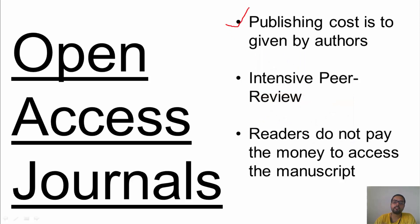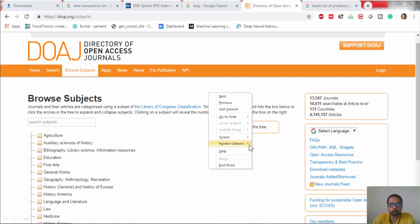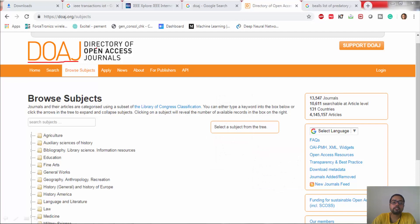In open access journals, they again have intensive peer review, but readers do not have to pay anything. The cost is given by the authors. You can see a snapshot of the website called DOAJ — Directory of Open Access Journals — which maintains a list of all open access journals organized by subject. Next time you want to find an open access journal, you can search through this website.